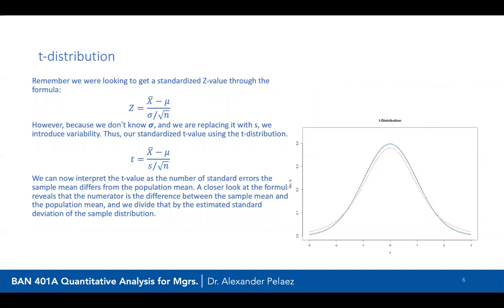To standardize, we use x-bar minus mu divided by the population standard deviation divided by the square root of n. Because we don't know the population standard deviation, we replace it with s, the sample standard deviation. Therefore our standardized t-value is represented by this formula. They're very similar — the only difference is using the sample standard deviation instead of the population standard deviation. We interpret the t-value as the number of standard errors the sample mean differs from the population mean, just like with the z-score.